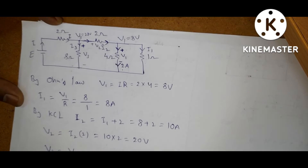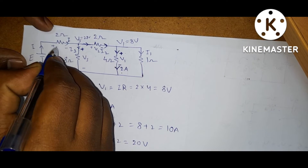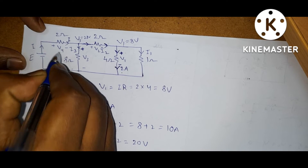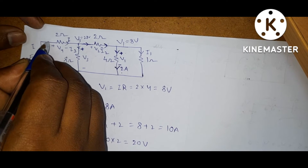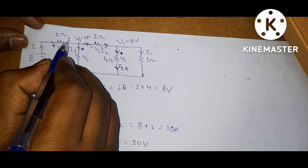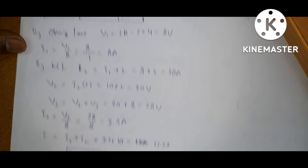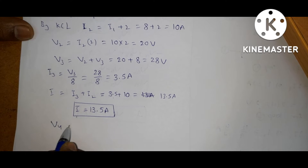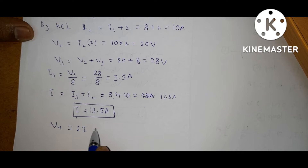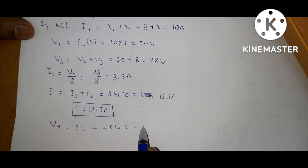Now by KVL, first find the voltage across the 2 ohm — let it be V4. Current enters here, so it is the positive terminal; current is leaving here, so it is the negative terminal. What is V4? V4 is equal to 2 into I, that is 2 into 13.5, which gives 27 volts.